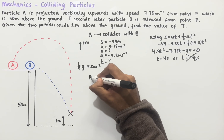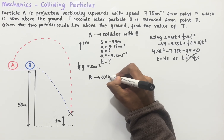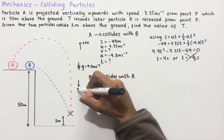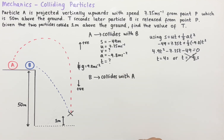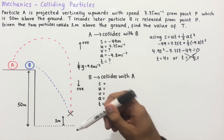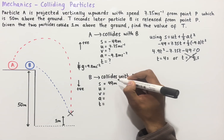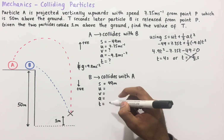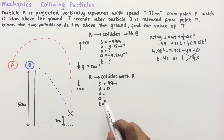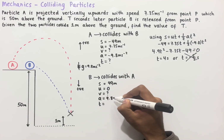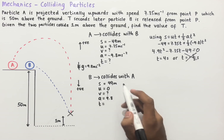We now consider the journey from when B is released to when it collides with particle A. Since B starts by moving vertically downwards, we make the downwards direction positive. Setting up SUVAT for particle B: the displacement is from where B starts to where it collides with A, which is 49 meters downward, so S equals 49. The initial velocity of B is zero because it is released from rest. We don't know the final velocity, and the acceleration due to gravity is 9.8 acting downwards, so it is positive. The time for this journey is also unknown.